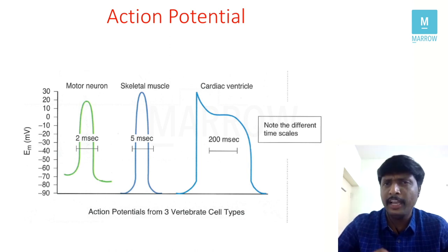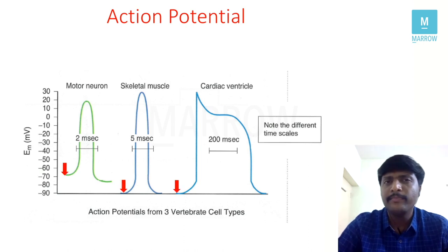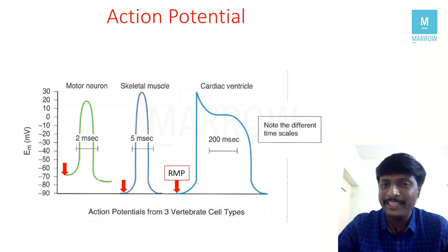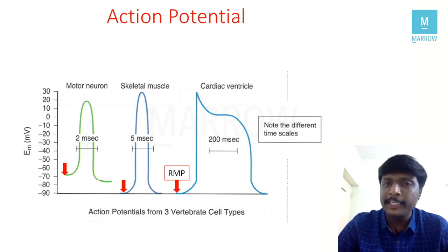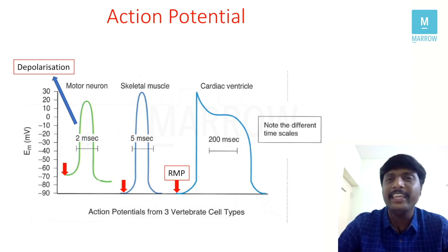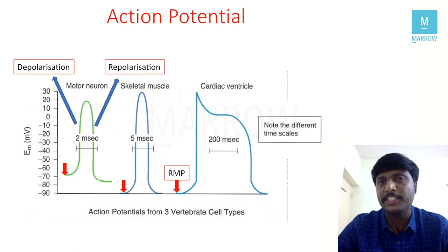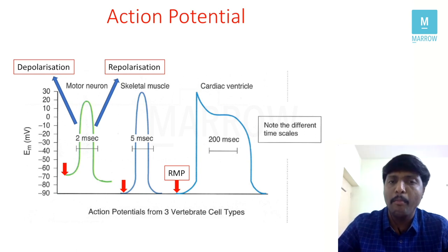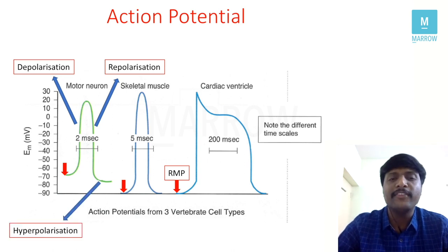With the help of a red arrow mark, I am pointing to a particular potential value — the resting membrane potential. In a motor neuron it is around minus 70 millivolts. In skeletal muscle and cardiac ventricles it is around minus 90 millivolts, as clearly seen in the diagram. In an action potential, moving towards a positive value is depolarization. Following depolarization, the cell regains its polarity — that is repolarization. Following repolarization, going below RMP is hyperpolarization.